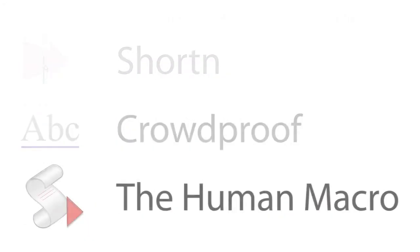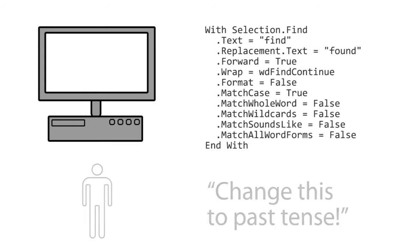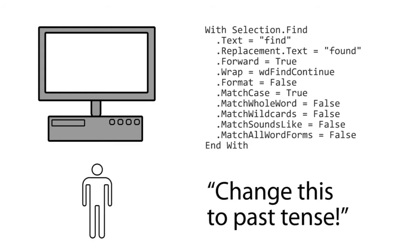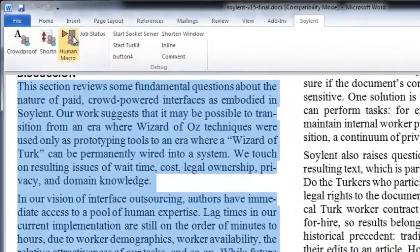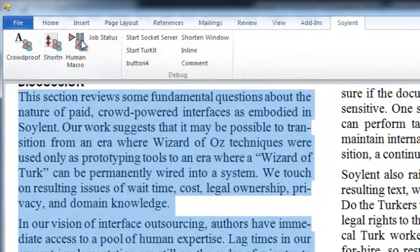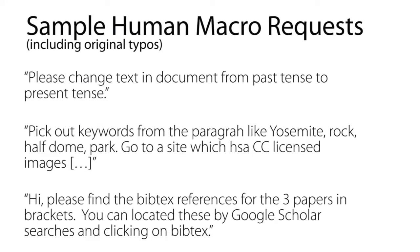Last is the Human Macro, a natural language crowdscripting interface. Usually users would need to translate their ideas into code, which is tough. Instead, the Human Macro lets you automate complex actions by describing what you want naturally, in words. Launching the Human Macro opens a request form where you can write what you want, like you would a Craigslist post. Our goal here is to keep users from launching buggy commands, so we show a live preview of what the request will look like, and let the user do a test run on a single paragraph or sentence. Our users have gotten the Human Macro to transform a short story from past tense to present tense, to find Creative Commons licensed images to describe a paragraph, and to flesh out citation sketches into a real References section.